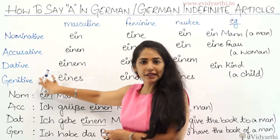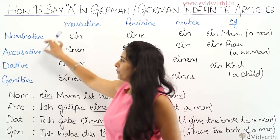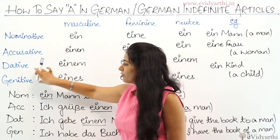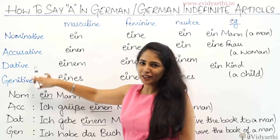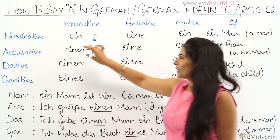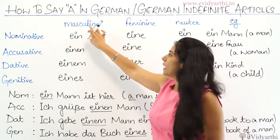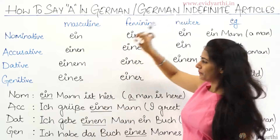There are four cases: nominative, accusative, dative, and genitive in German. And the genders are masculine, feminine, and neuter.